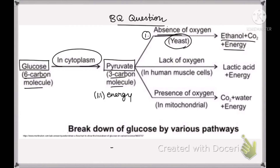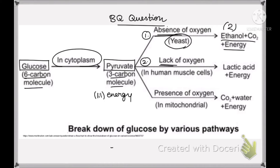Ethanol is a two-carbon molecule. The second condition occurs when there is a lack of oxygen — insufficient oxygen for the cell. Sometimes during a running competition, we breathe faster and faster, and we experience muscle cramps. That's because our muscle cells do not get enough oxygen to respire properly. In this condition, the products released are lactic acid, which is a three-carbon molecule, and energy. The energy released in both these first two cases is very less.